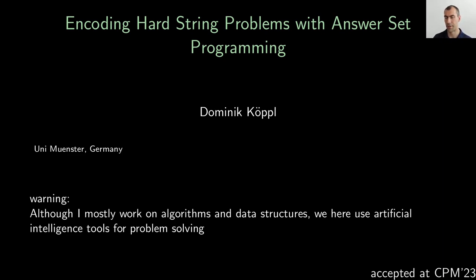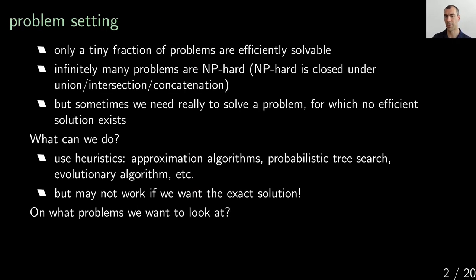I consider this because only a tiny fraction of problems can be solved efficiently. It's actually many more problems that are NP-hard — you can even see that there are infinitely many, because if you take NP-hard instances A and B and want to find an instance that attains the properties of both, it's still NP-hard. So the NP-hard property is closed under union, intersection, and concatenation.